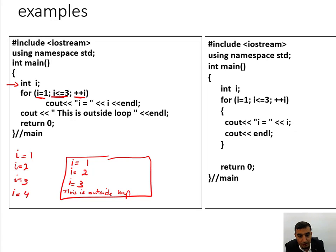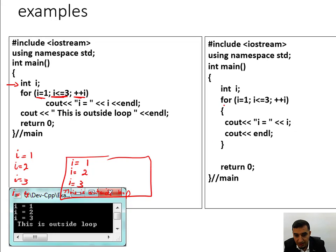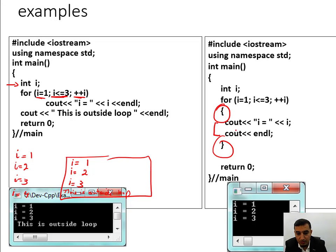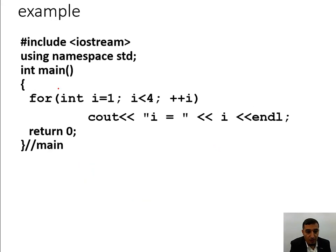This is the output. This next program is the same but uses a block of statements, so we execute two instructions per iteration — and it displays the same output.